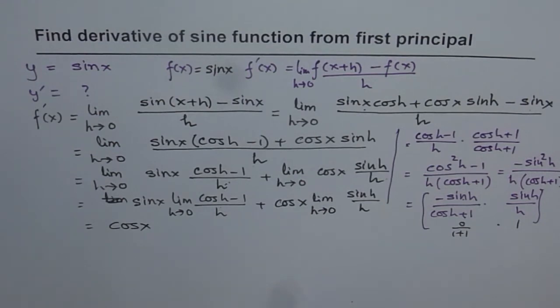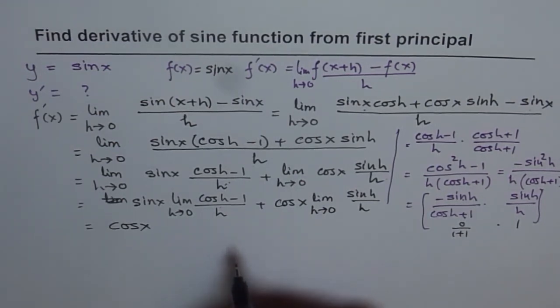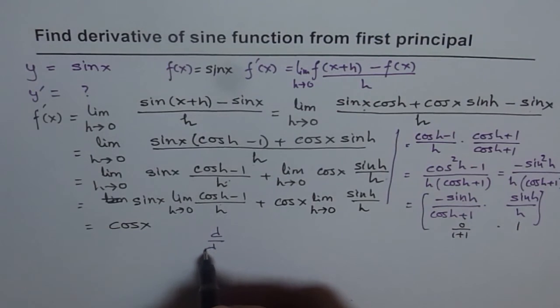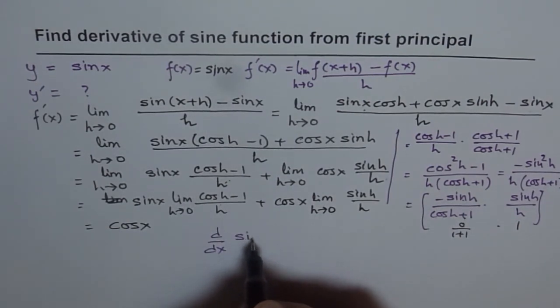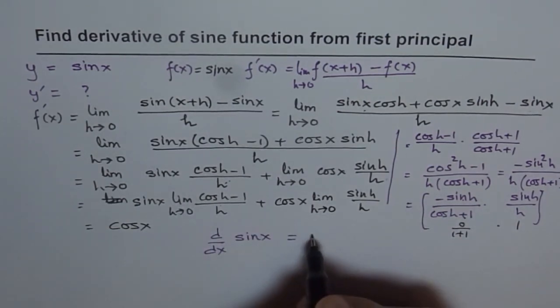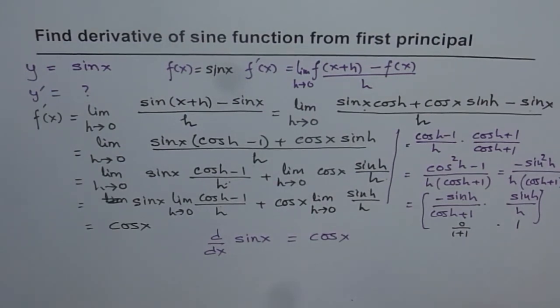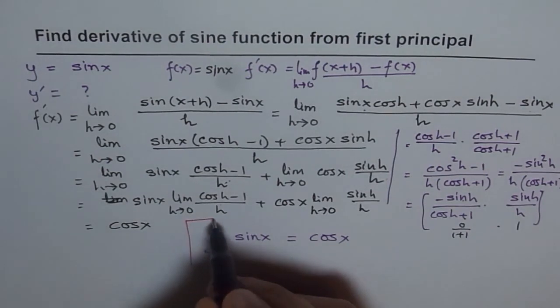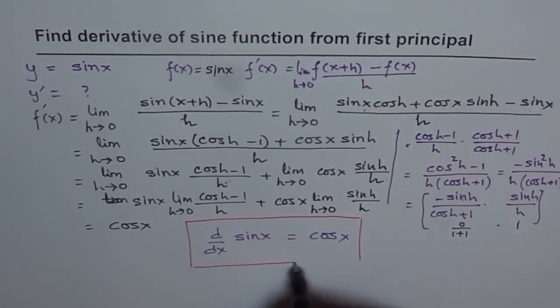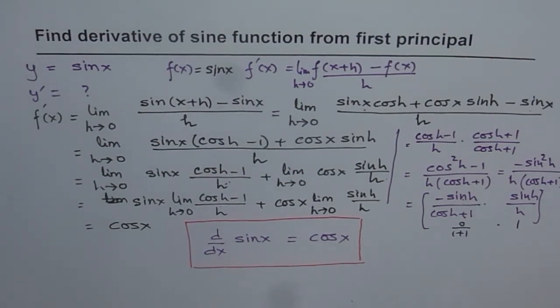So that is the derivative for sin x. So we can write d dx of sin x equals to cos x. This is the most important derivative for trigonometry. And from here we can develop each and every formula which we are going to use for differentiation for derivatives of trigonometric functions. So let's move forward from here and do calculus. Thank you.